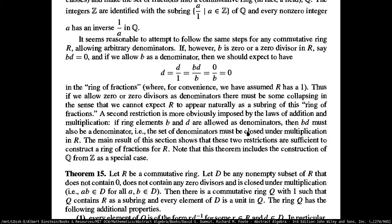If B is zero or a zero divisor in the ring, meaning BD equals zero, and if we allow B as a denominator, then we should expect D equals D over 1 equals BD over B equals zero over B, which is zero. But we cannot have zero or zero divisors in the denominators because it is not well-defined in fractions as we know. So we'll have to find a way to collapse this.